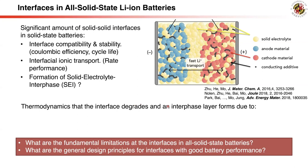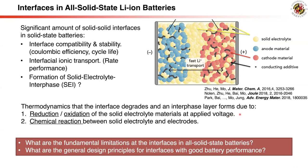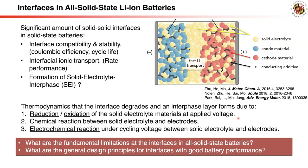Three mechanisms can affect interface stability: the reduction and oxidation of the solid electrolyte materials at the applied voltage, chemical reaction between solid electrolyte and electrodes, and electrochemical reaction under cycling voltage between solid electrolyte and electrodes. By analyzing this reaction thermodynamics, we can review the mechanisms and limiting factors for interface stability and provide general design principles for stable interfaces.